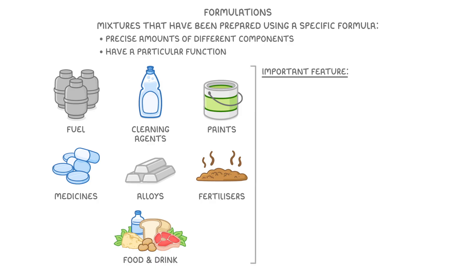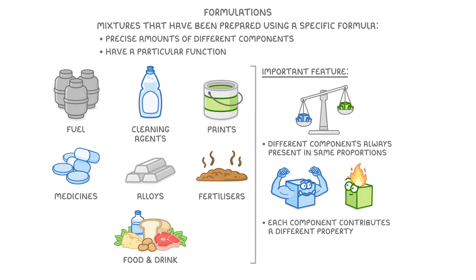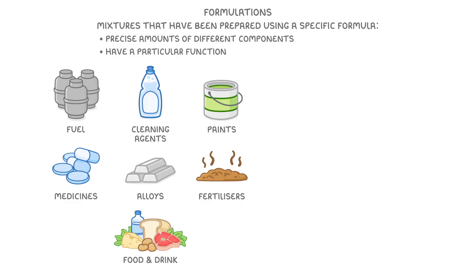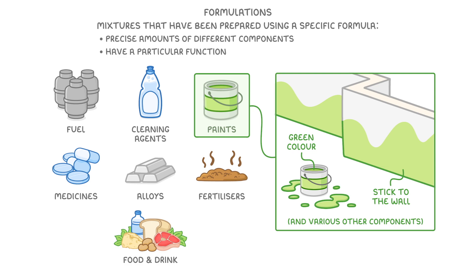The important feature of formulations is that the different components are always present in the same proportions, and each of the different components might contribute a different property. For example, if you were making some green paint, you would need components that give it a green colour, components that help it stick to the wall, and various other components depending on the particular type of paint you're trying to make. So once you've tried out a few different combinations and you get it right, that would be your formulation, which you could then use to make it over and over again using that same formula.